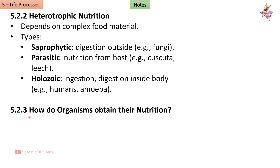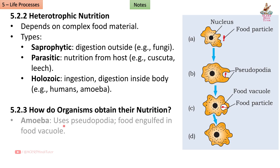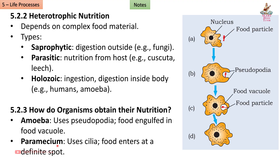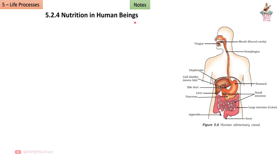Section 5.2.3: How do organisms obtain their nutrition? Amoeba uses pseudopodia to engulf food, which is enclosed in a food vacuole. Here we can see: this is the amoeba, this is the nucleus, this is the food particle, and these extensions are called pseudopodia. The food particle becomes enclosed in a food vacuole.